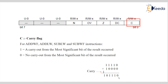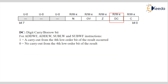If a borrow is generated, that borrow is also used to set or reset the Carry flag. If the borrow is generated from the most significant bit, this bit will be high; otherwise it is low.